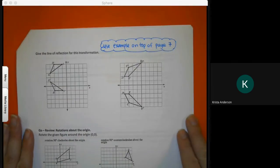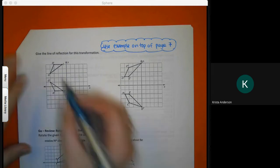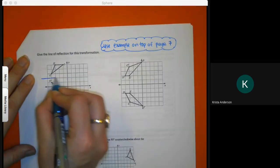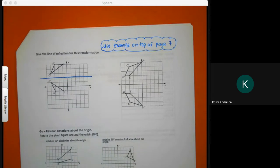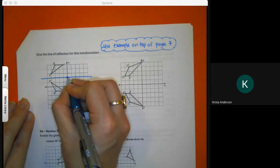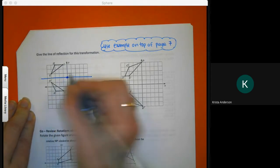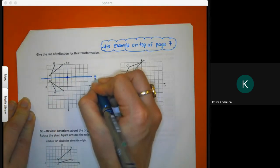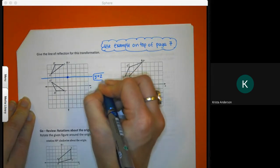For these examples, when I'm looking for the line of reflection, I'm going to draw the line in the middle of the two images. For this one, my line would be right here. When I write the equation for it, you notice that it touches right here where y is positive 2. My equation would be y equals 2. That would be my line of reflection.